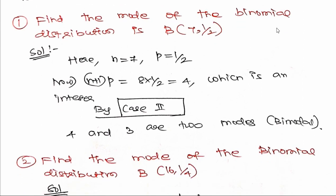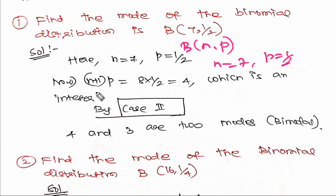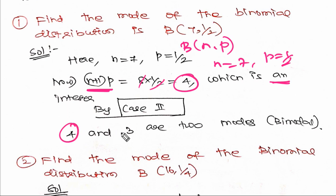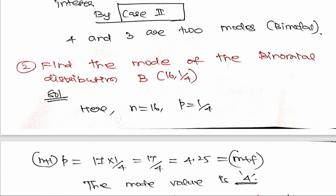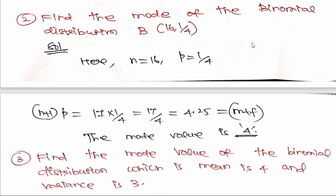Find the mode of the binomial distribution P(7, 1/2). Here n = 7 and p = 1/2. We calculate n+1 times p = 8 × (1/2) = 4. Since 4 is an integer, this is Case 1. The mode values are 4 and 4-1 = 3. We will find out this mode.